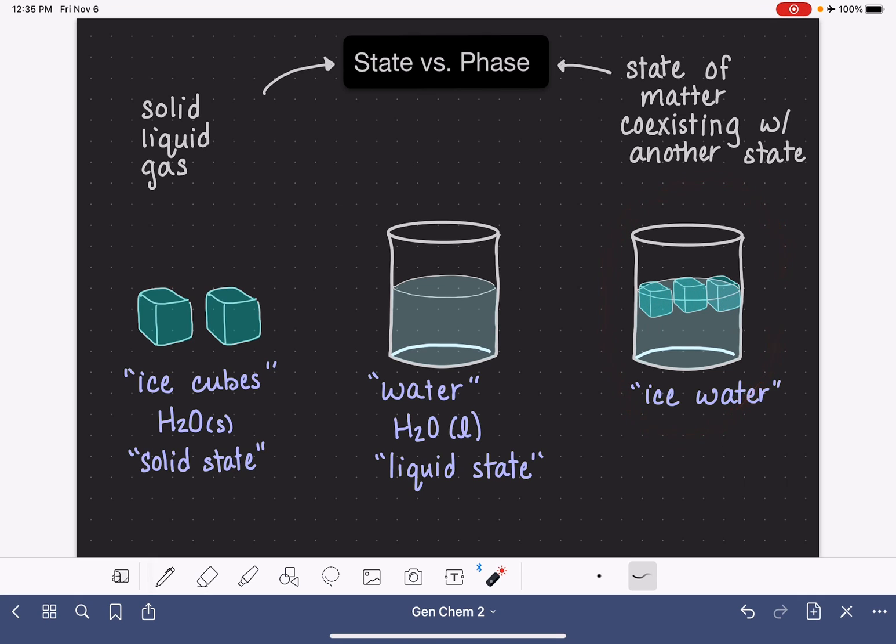Here we have one state of matter, liquid, that is coexisting with another state of matter, solid. This would be a situation where it would be appropriate for us to apply the word phase. We could say that the ice cubes represent the solid phase of this particular sample and the water represents the liquid phase of this particular sample.